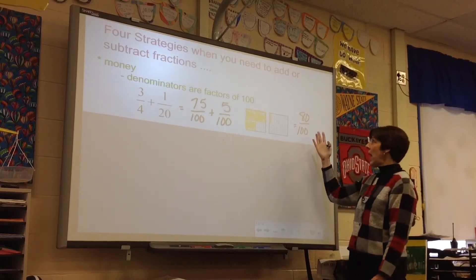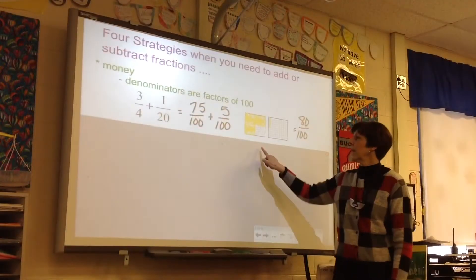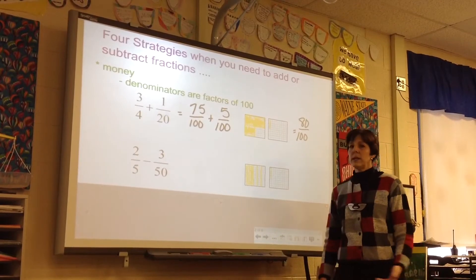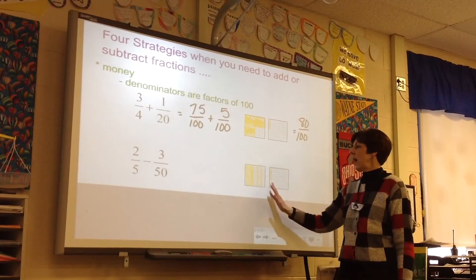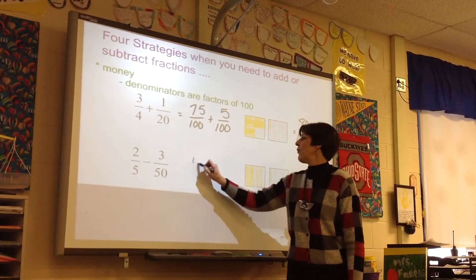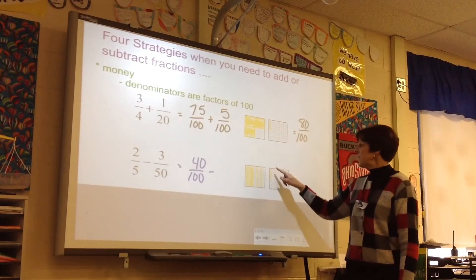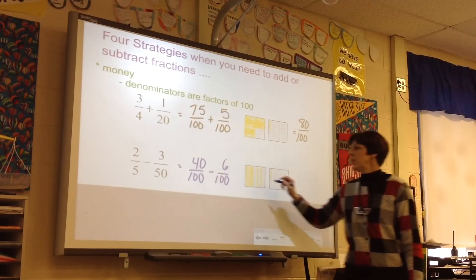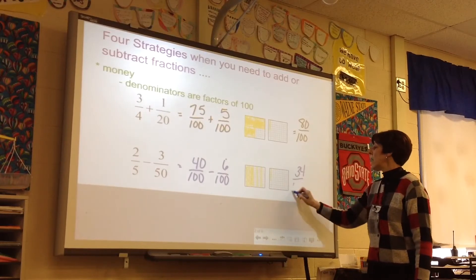That can be simplified, but it's fine to leave it at 80 hundredths. Here's the money model with the second example. 2 fifths minus 3 fiftieths. The students have learned to take the hundredth square, divide it into 5 equal pieces, using 2 of them for 40 hundredths. The 3 fiftieths would be the same as 6 hundredths, 40 hundredths minus 6 hundredths, 34 hundredths.